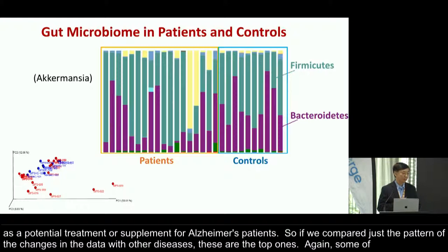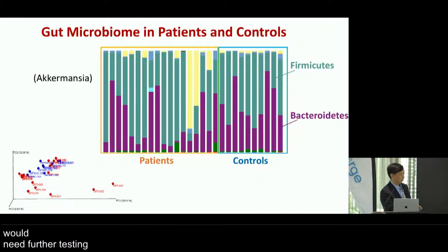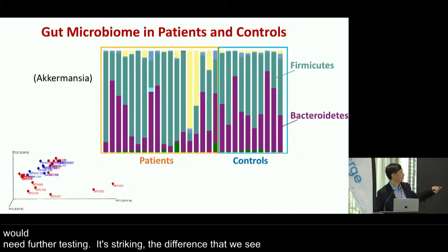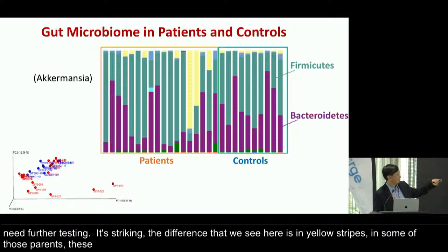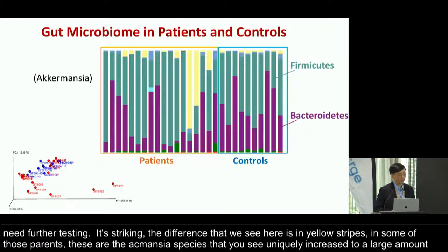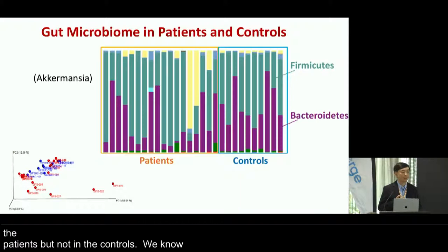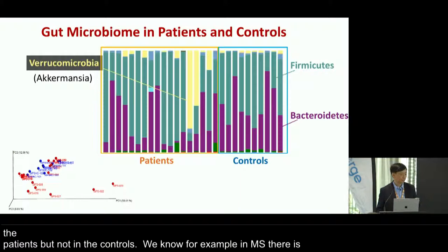When we look at the gut microbiome in patients, one striking difference is this yellow stripe seen in some patients — these are the Akkermansia species uniquely increased to a large amount in patients but not in controls. We know that in multiple sclerosis there are similar findings. These are the so-called Verrucomicrobia species.